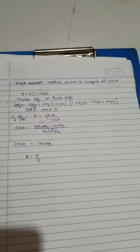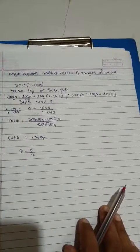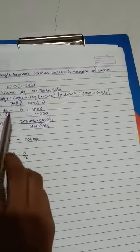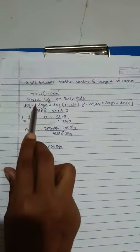Now, we find the angle between radius vector and tangent of the curve for the given problem. First, we take log on both sides.